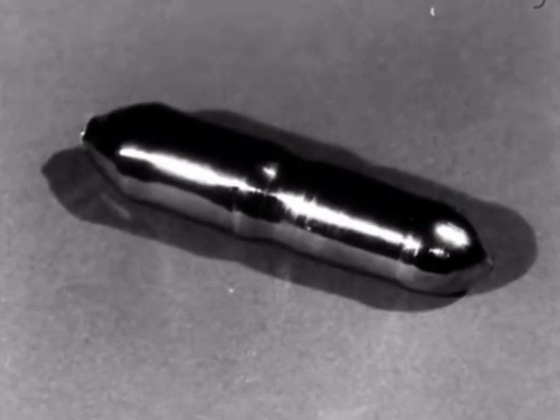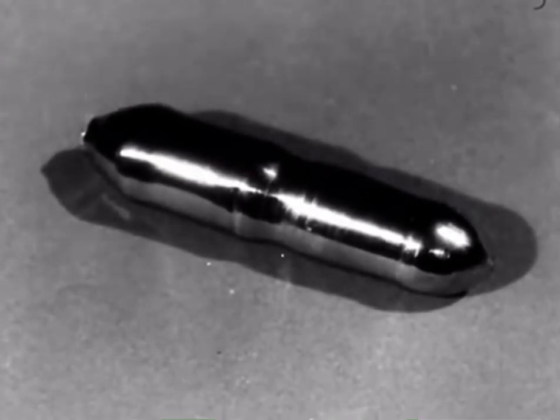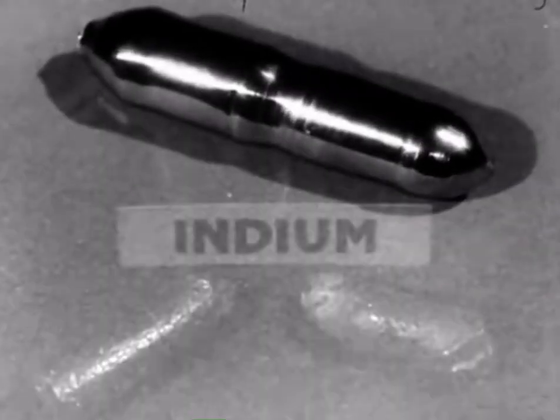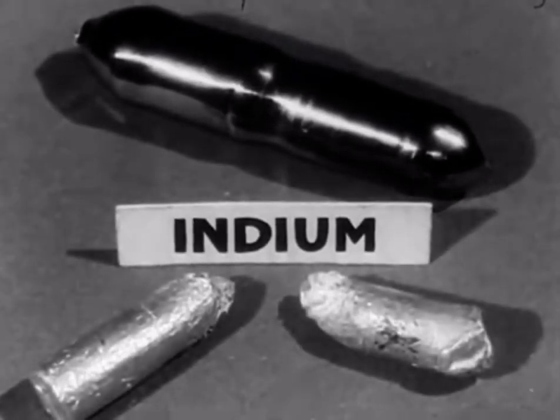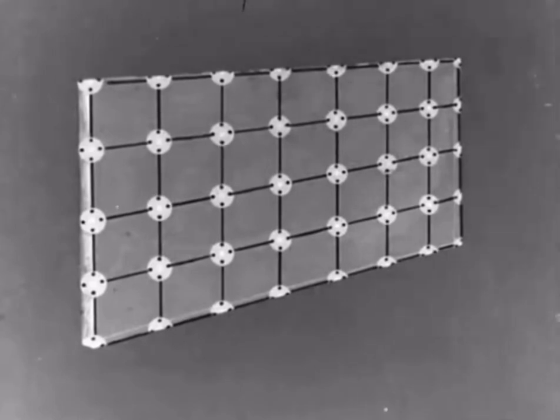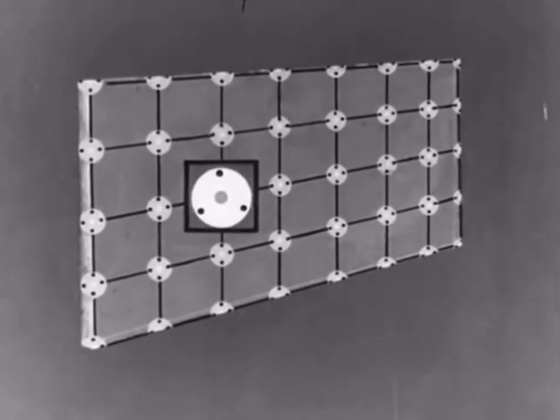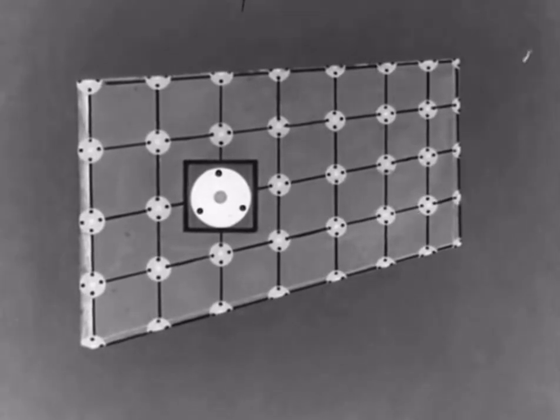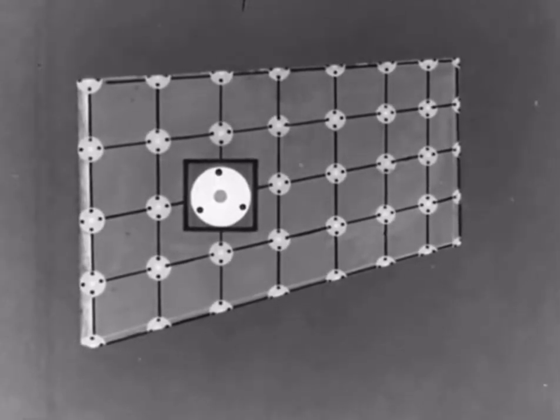There is another type of impurity which also increases the conduction of pure germanium, the metal indium. Here is the germanium lattice again. The atom of indium, as you see, has only three electrons in its outer orbit.